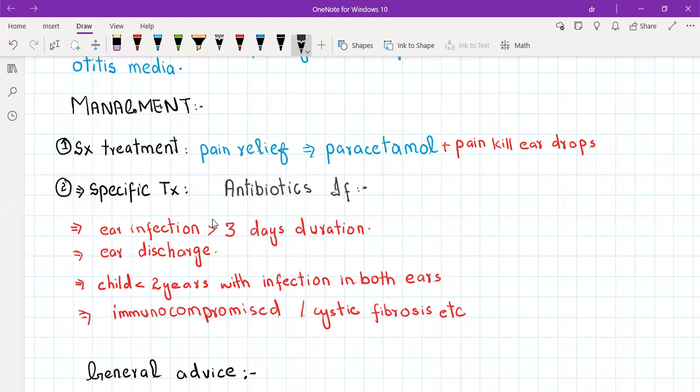So antibiotics won't be probably useful. You only give antibiotics under these four conditions: either the ear infection is more than three days in duration, or there is ear discharge - ear discharge means it is a bacterial infection - or if a child is less than two years with infection in both ears, or if the patient is immunocompromised or a cystic fibrosis patient. Then you will give antibiotics under these four conditions only.